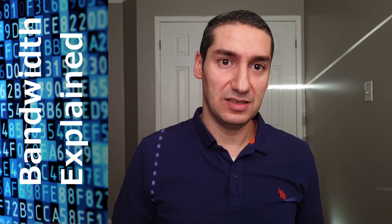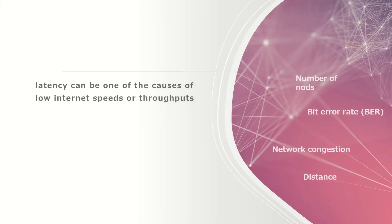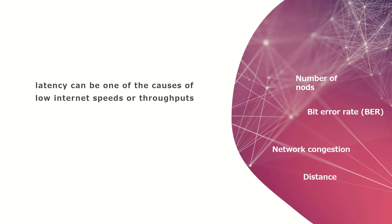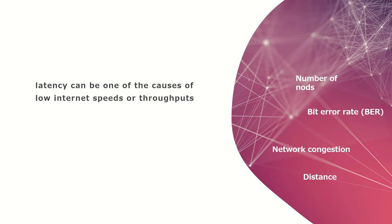Why don't we achieve the full 50 megabits per second? There are many reasons. Mainly, latency is one key reason for the difference between internet speed, throughput, and bandwidth. Latency can be affected by the number of nodes your signal passes through before reaching the source, the bit error rate — meaning how many packets have errors and need to be retransmitted — as well as network congestion and the distance between the source and your system.